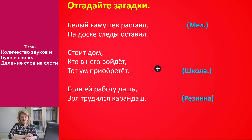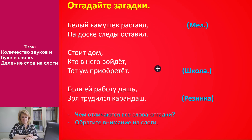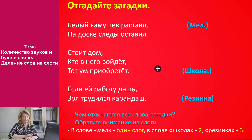Так чем отличаются все эти слова-отгадки? Обратите внимание на слоги. Догадались? Правильно: в слове «мел» один слог, в слове «школа» два, и в слове «резинка» три слога. Молодцы!